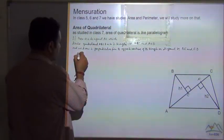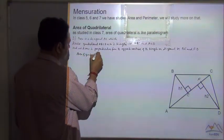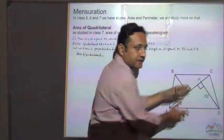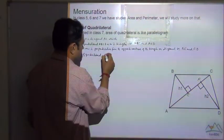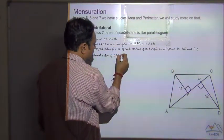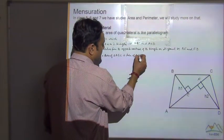So then the area of quadrilateral is equal to sum of the two areas of the triangle, that is area of triangle ABC plus area of triangle ACD.